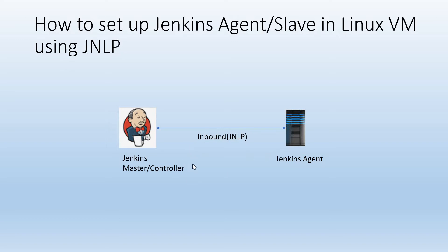What we need to do is create a new node inside Jenkins master controller. Once we create it, it would generate a command with a corresponding agent.jar and also a corresponding JNLP file. Those files we have to copy inside the Jenkins agent, and once we run the agent.jar, using the JNLP file, it will automatically try to connect to the master. To connect to the master, it uses a TCP port, so we have to enable that port in the Jenkins master controller as a prerequisite.